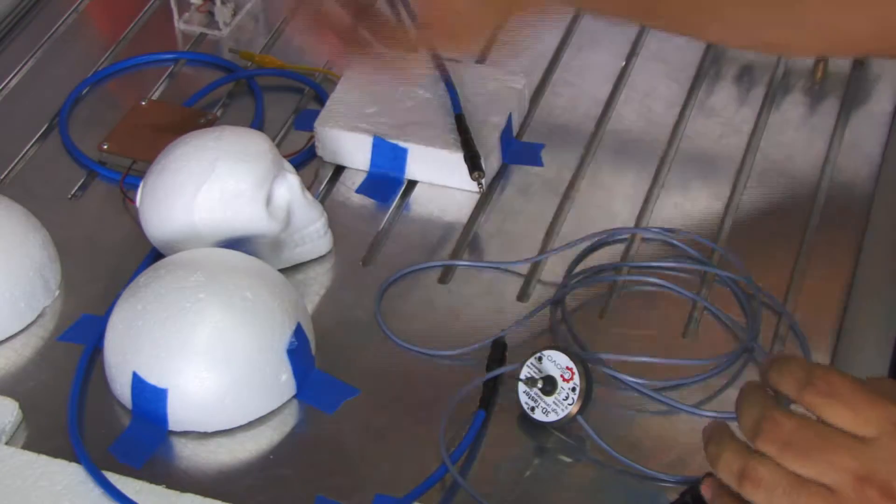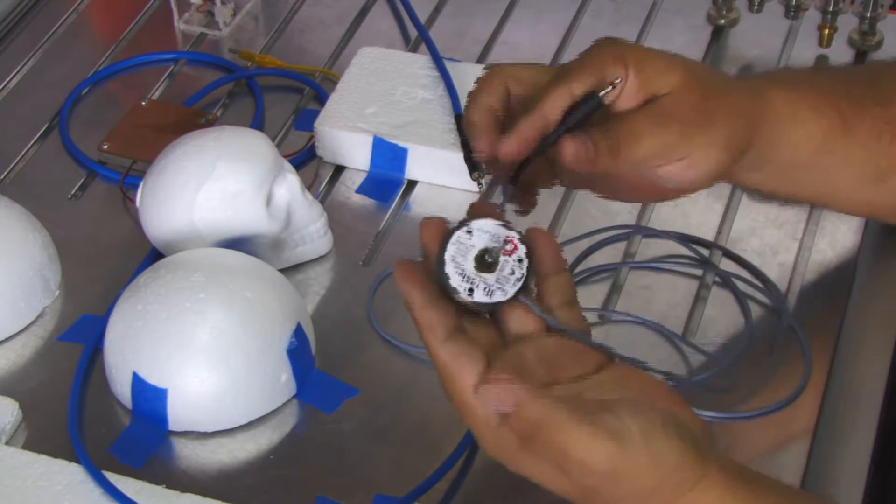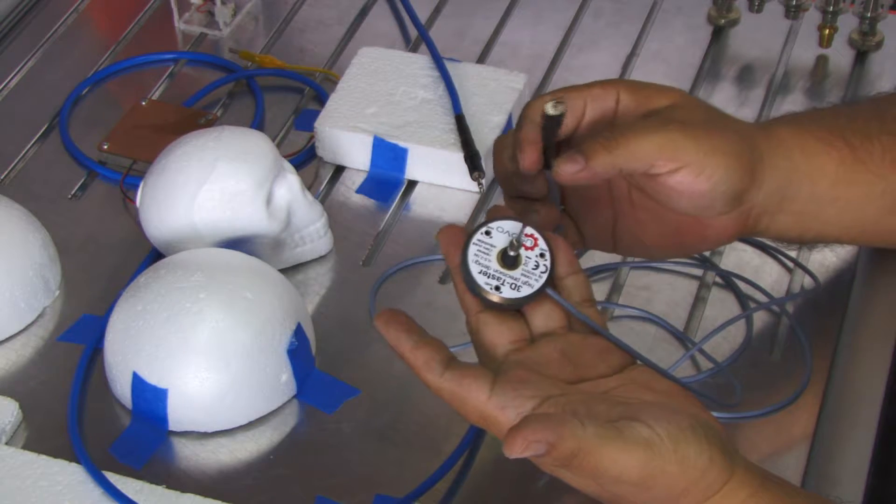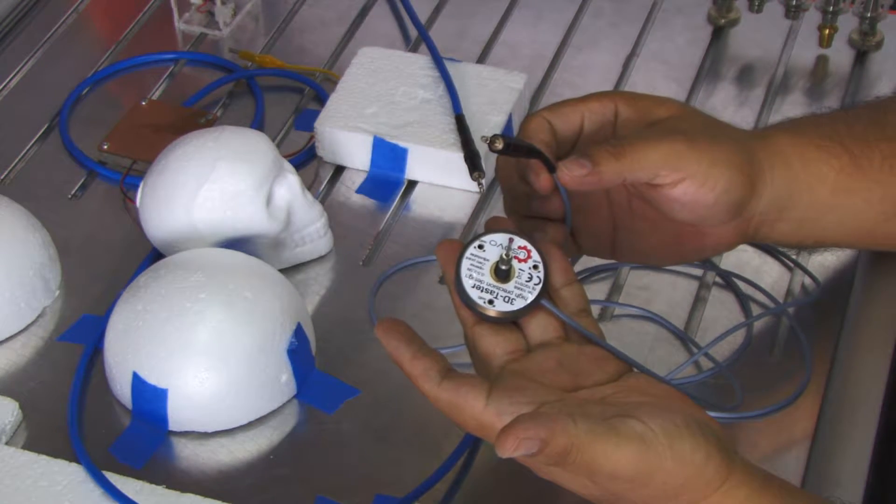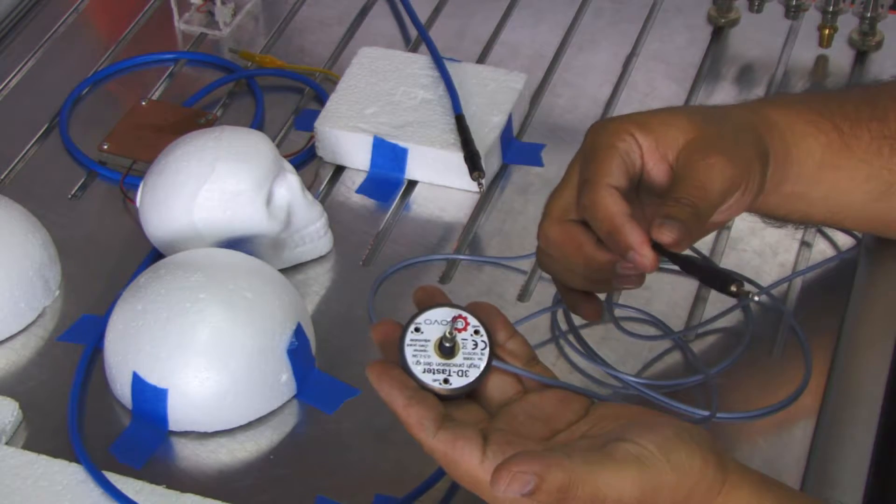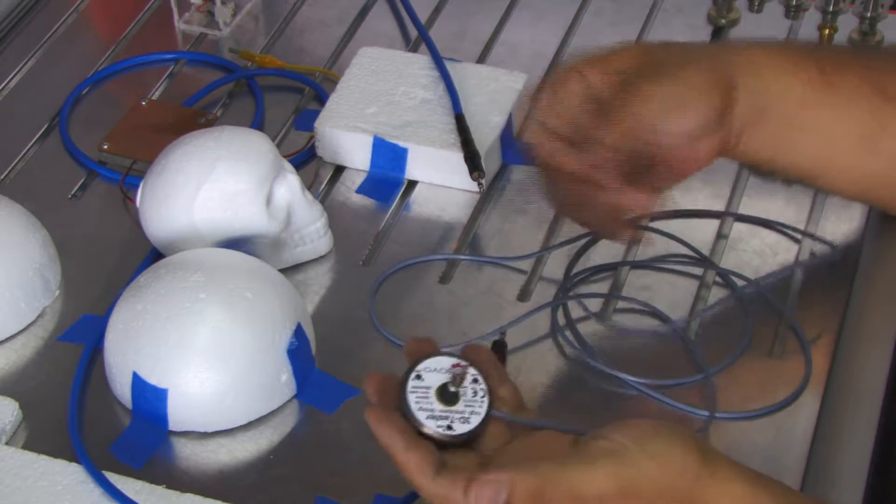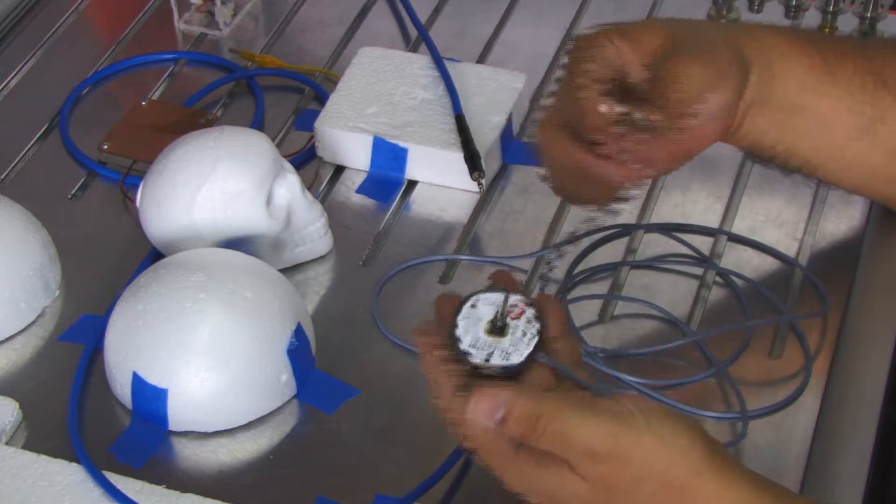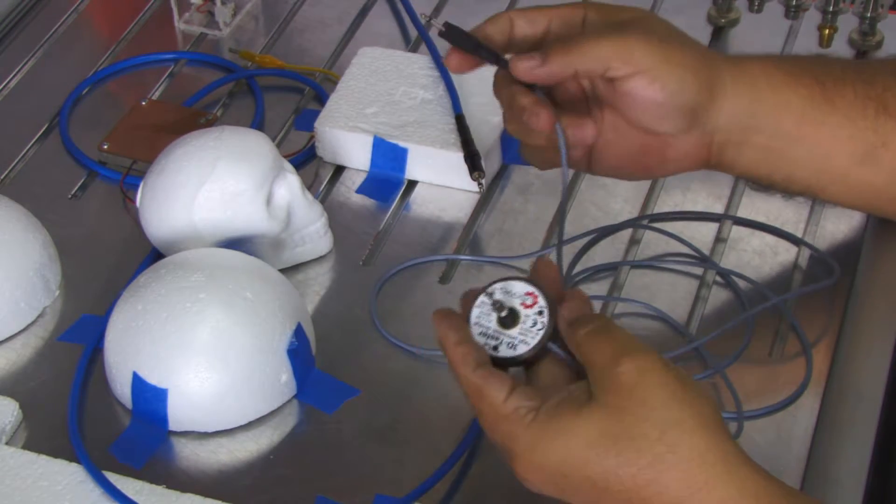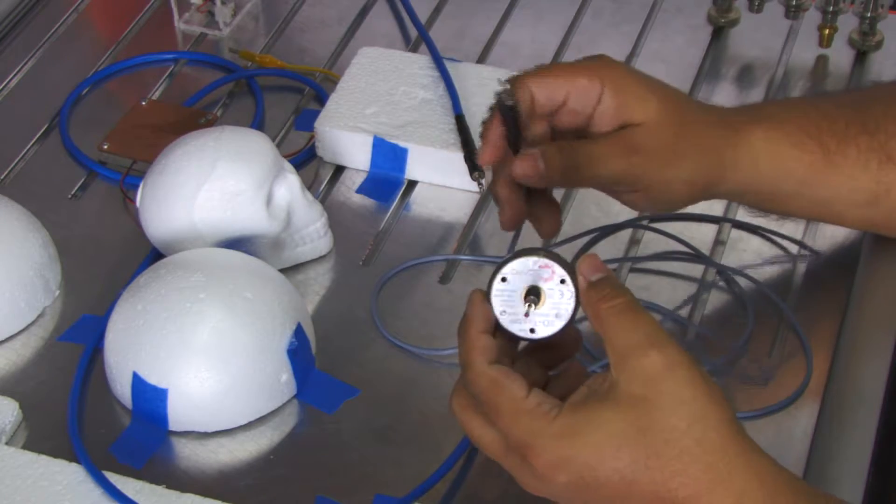So in resume, you have to connect this to the same connector as the tool length sensor. You can have one or the other connected. And if you want to have both, you need some kind of a switch to switch between both. You cannot have both working at the same time.